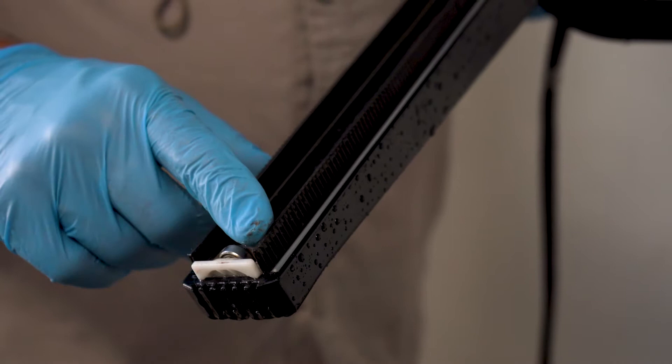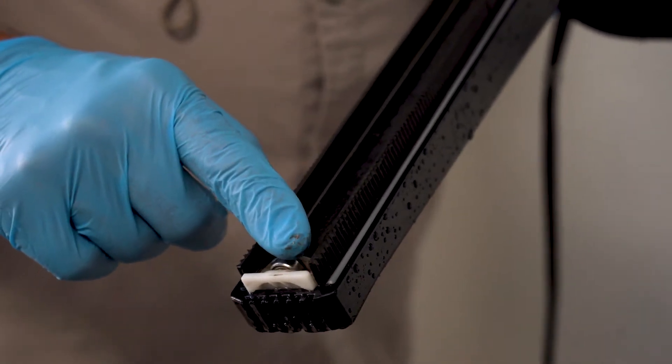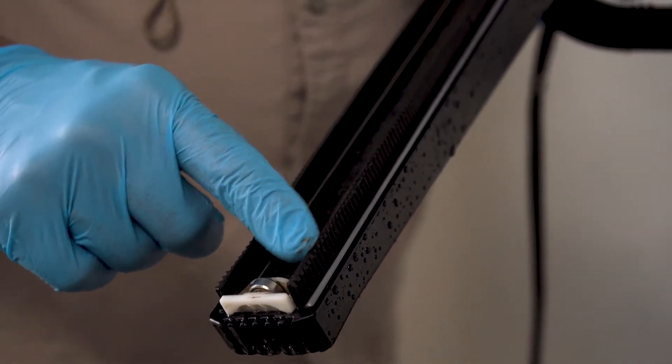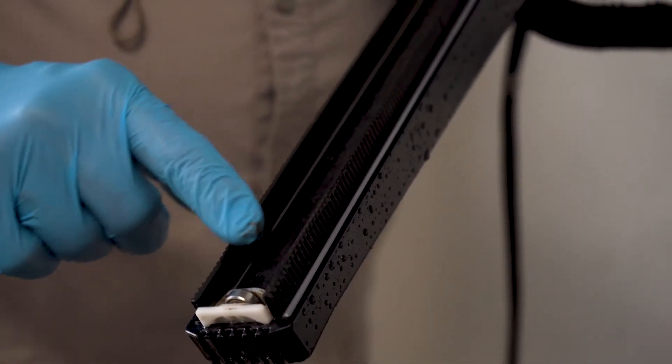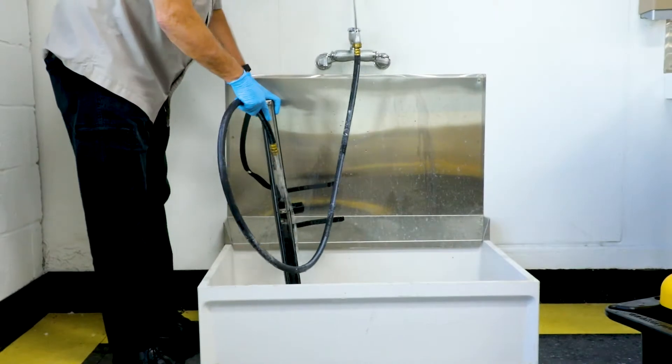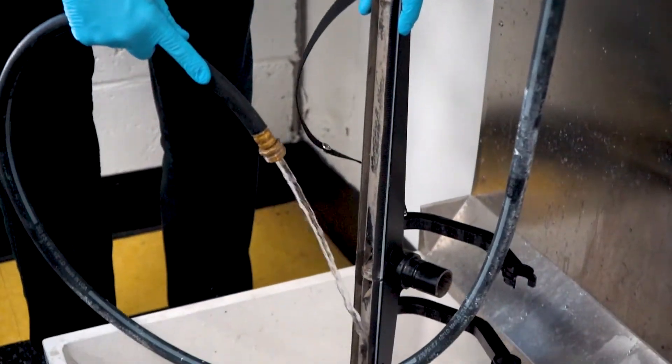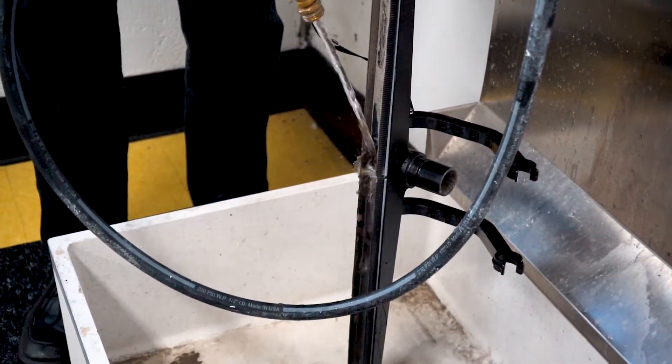The inside edges of the squeegee blades should be sharp. If the inside edges are worn or rounded, it will have an impact on the effectiveness of the vacuum. Now is also a good time to rinse the underside of the squeegee head to remove built-up dirt and debris.